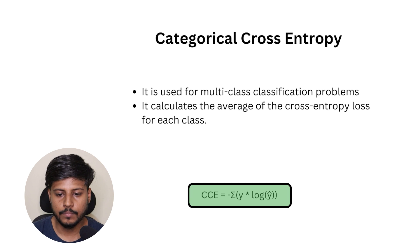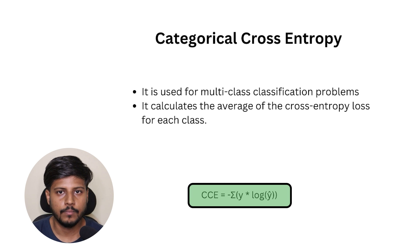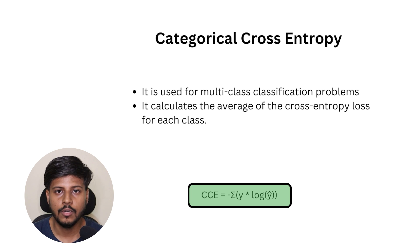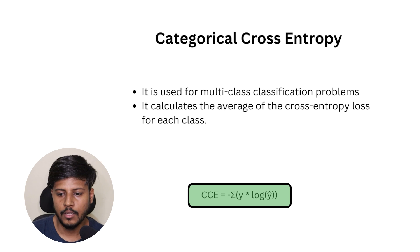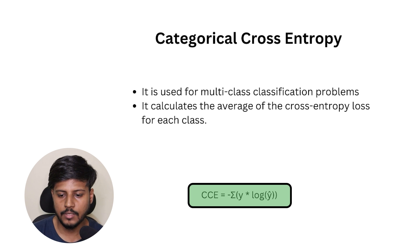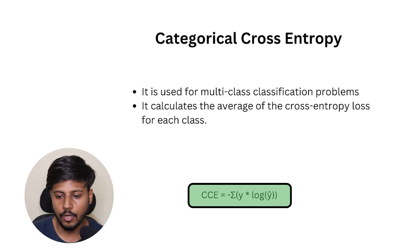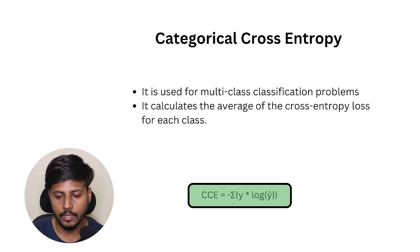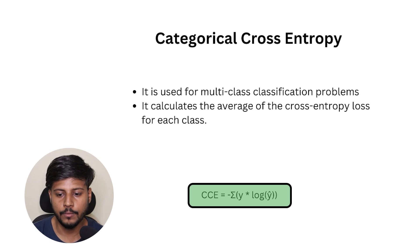For multi-class classification, we have categorical cross entropy. The mathematical equation is similar to binary cross entropy but with one difference: here we perform the summation of the actual value multiplied by the log of the predicted value across all classes. This cost function is more suitable for multi-class classification problems.